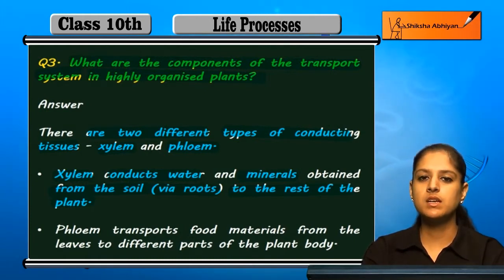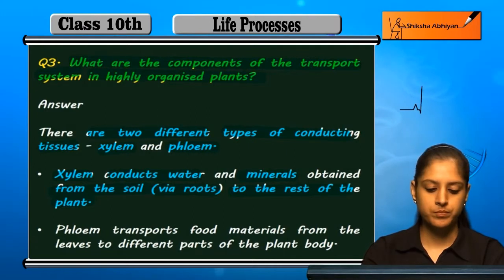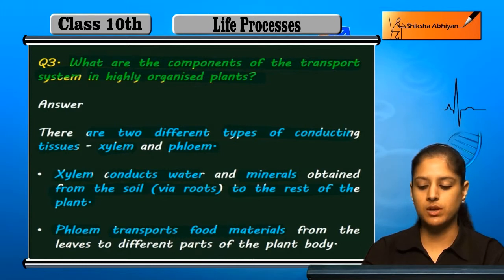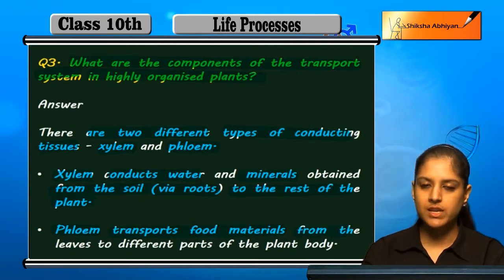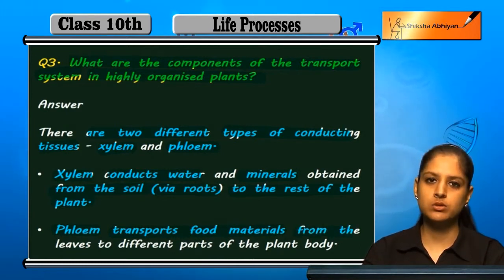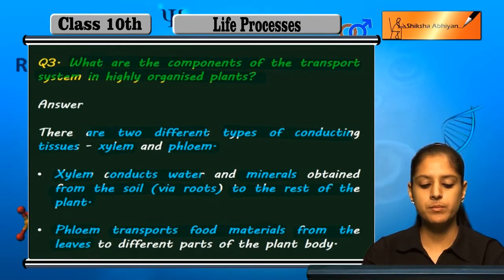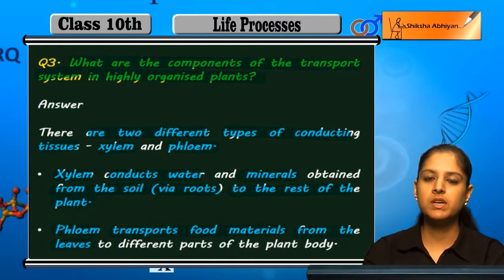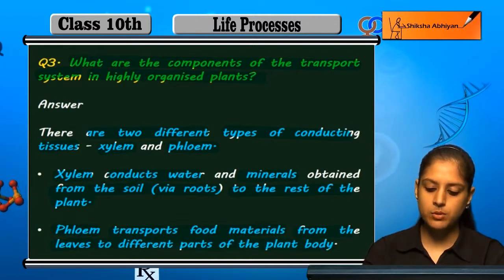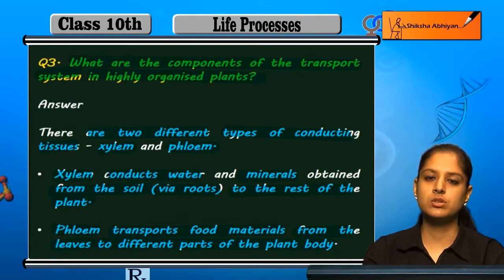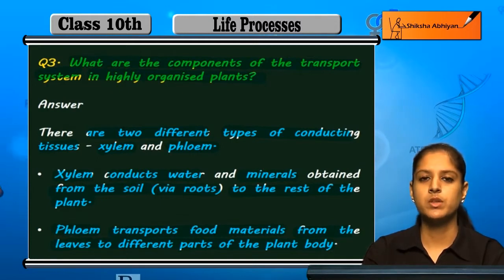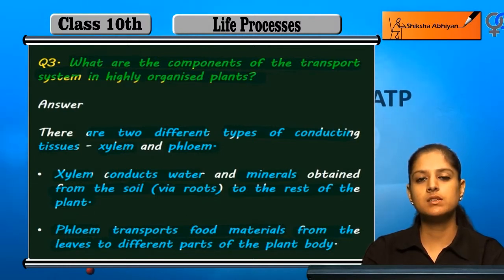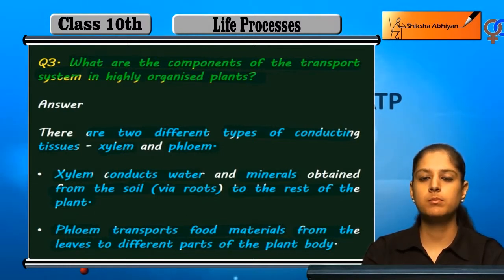Phloem's job is the transport of food materials. The leaves are the kitchen of the plant — all food is synthesized there. So phloem takes the food material synthesized in the leaves and transports it to all other parts of the plant body. So water and minerals are transported by xylem, and food materials are transported by phloem in a plant.